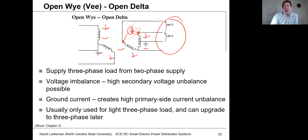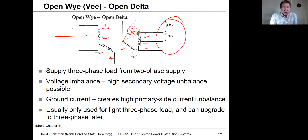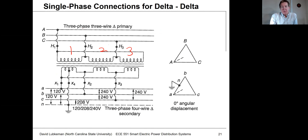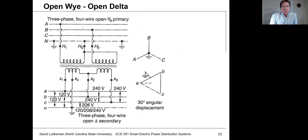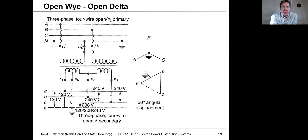You could start out with this two-transformer arrangement and upgrade to three-phase later by adding another phase wire and a third transformer. Here's what this actually looks like using the special-purpose two-transformer connection — it shows how to make all the necessary connections to get a three-phase voltage set even without the actual third transformer in the circuit.